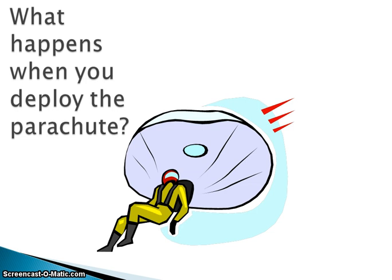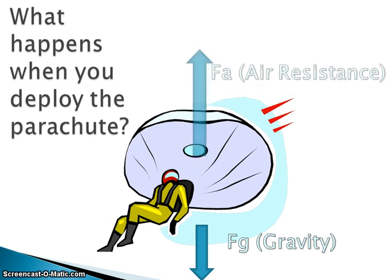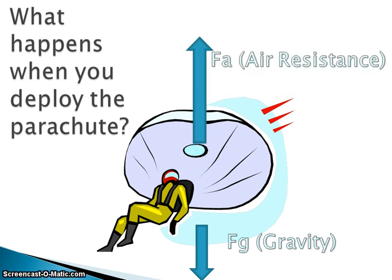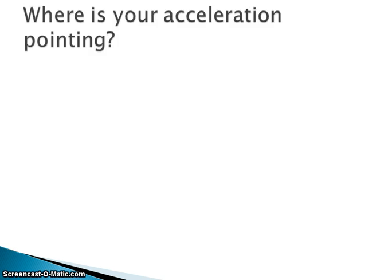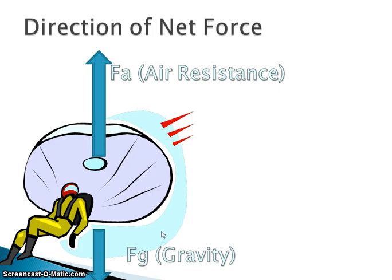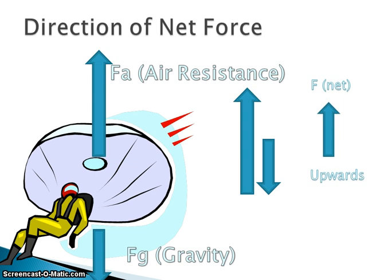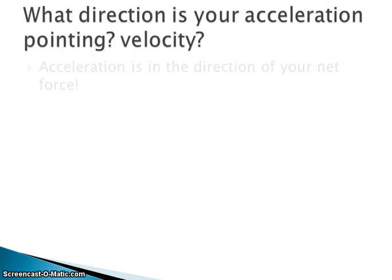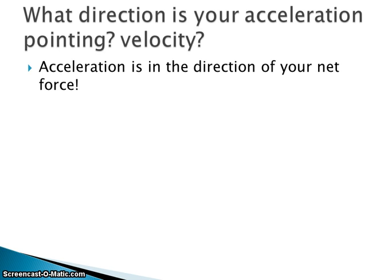However, once you deploy the parachute, what happens? Your force due to gravity remains the same as in the past two examples. However, because you're falling, your parachute is so big it has a huge air resistance. Since your air resistance is greater than that due to gravity, your acceleration will be positive or pointing upwards. As you can see in this image, your air resistance is greater than the force due to gravity, and thus your net force is upwards. So which direction is your acceleration pointing? The direction of your net force — which is upwards.